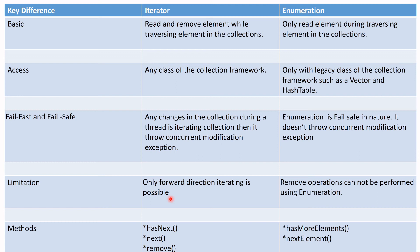Regarding limitations: only forward-direction iteration is possible with Iterator. With Enumeration, the remove operation cannot be performed. Regarding methods: Iterator has hasNext(), next(), and remove(). But Enumeration has only hasMoreElements() and nextElement() — it does not have a remove method.